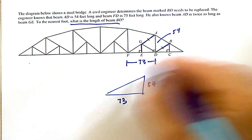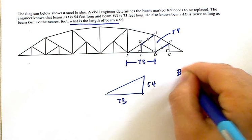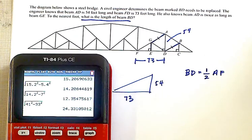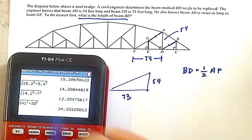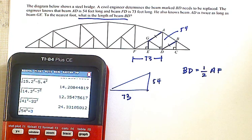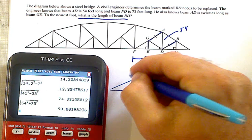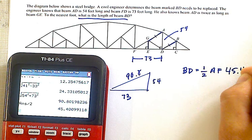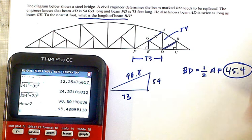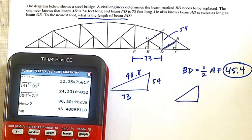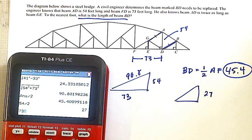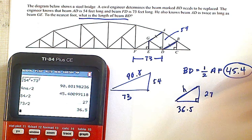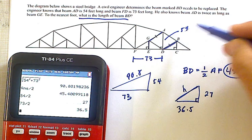BD will be equal to half of AF. So I'll find my 54 squared plus 73 squared and get 90.8. I could divide that by 2 and get a 45.4 roughly for this distance of BD here. Another way is to maybe take a right triangle and say 54 divided by 2 is 27 and 73 divided by 2 is 36.5 and solve for the hypotenuse that way. Basically taking half of the 73 and the 54, but you'll get the same answer here.